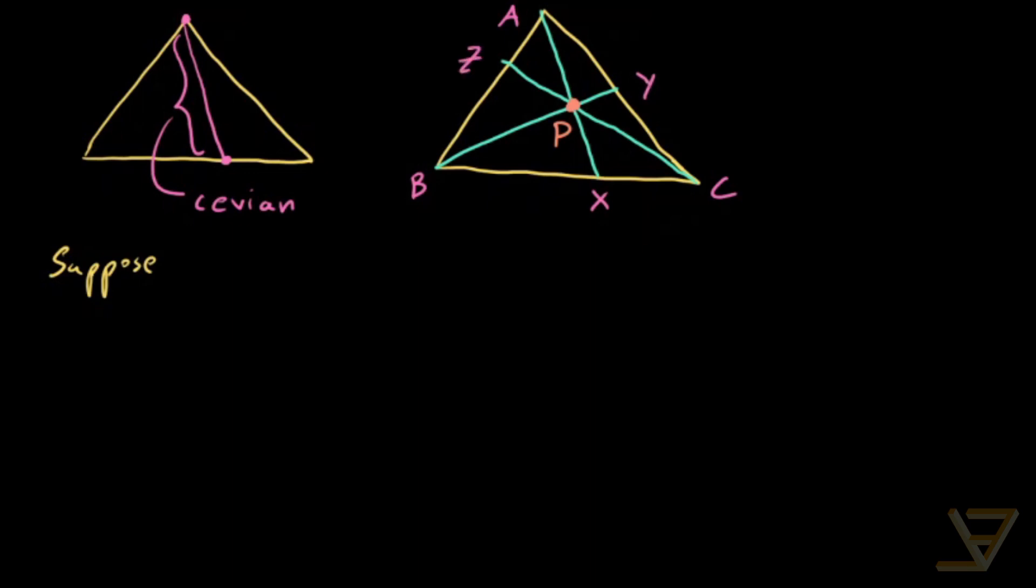And suppose AX, BY, and CZ are concurrent at P. So in this direction, we're assuming that there is a point of concurrency. In the other direction, we're going to prove that there's a point of concurrency. So let's see what criteria we end up with.